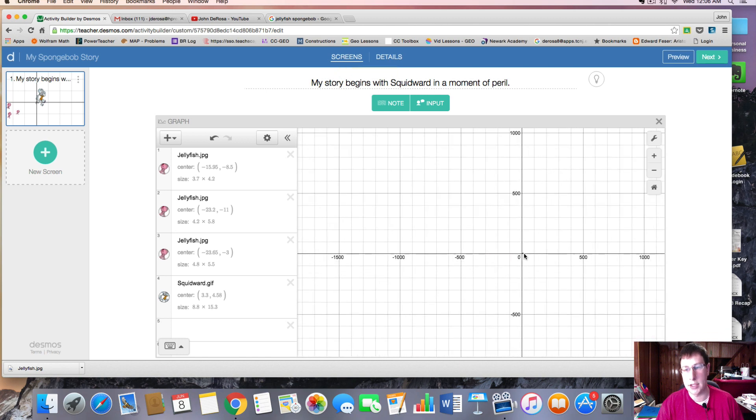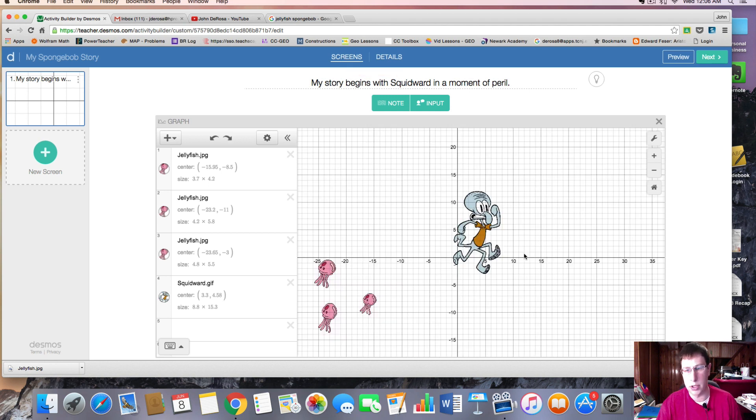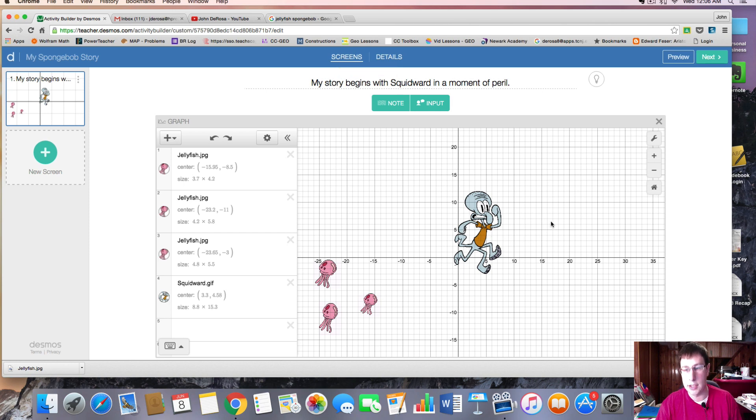Also just remember, Desmos, if you accidentally do something like that, zoom out to 1500, just press Command Z or undo, and it'll bring you right back to where you were. The type of mouse I have, it always zooms like that, it's very sensitive, I accidentally zoom sometimes.